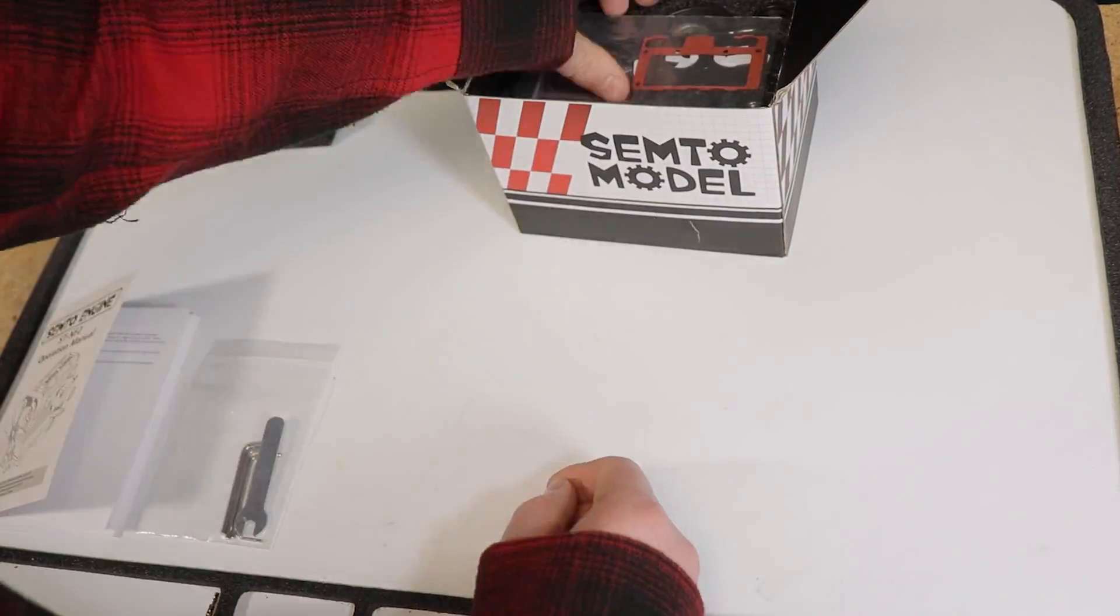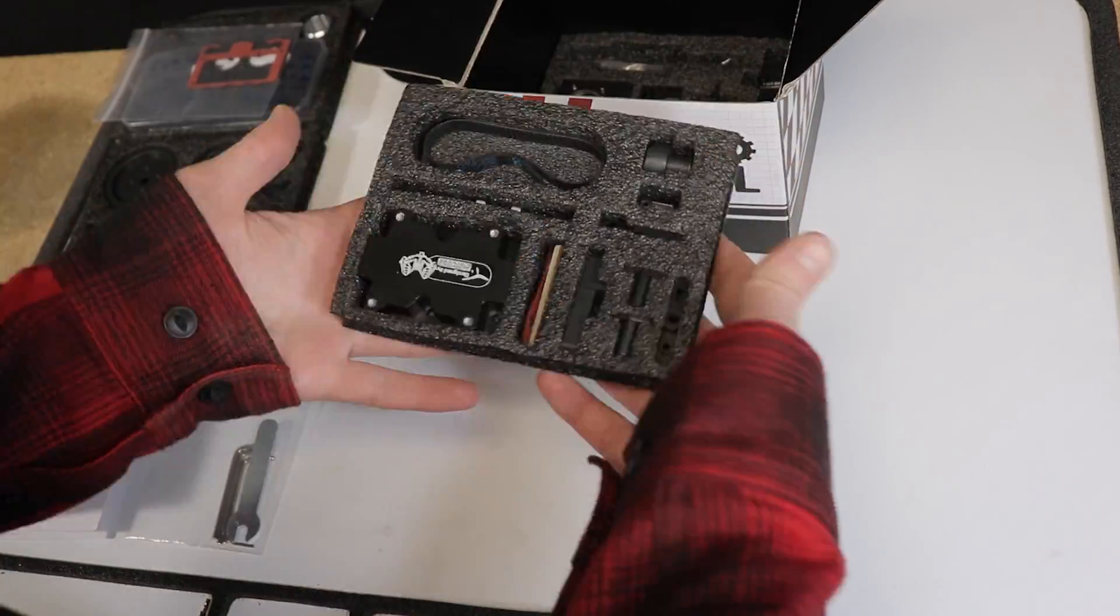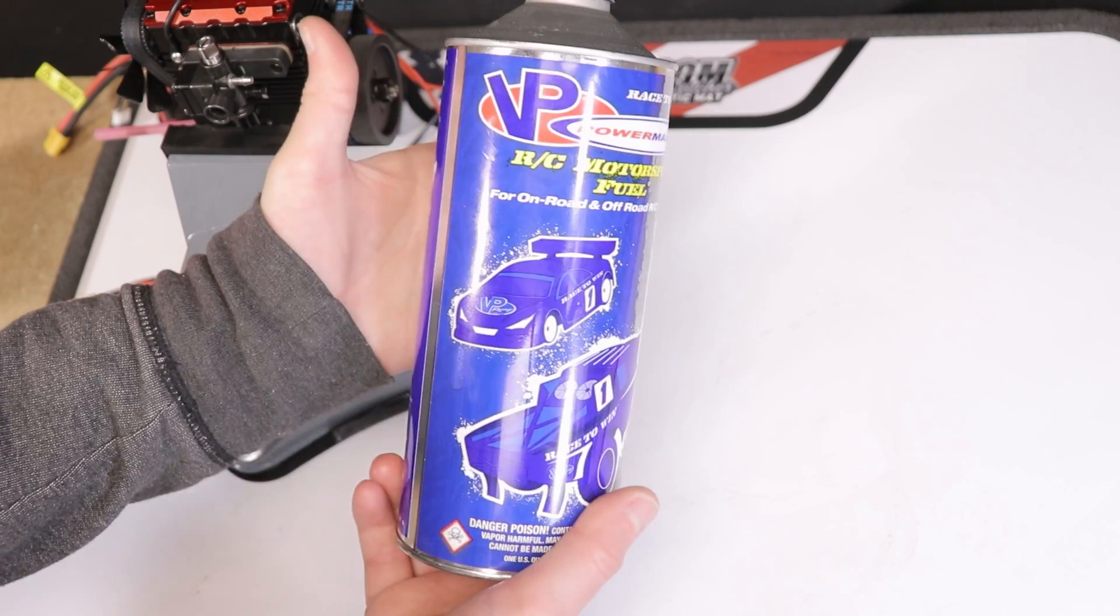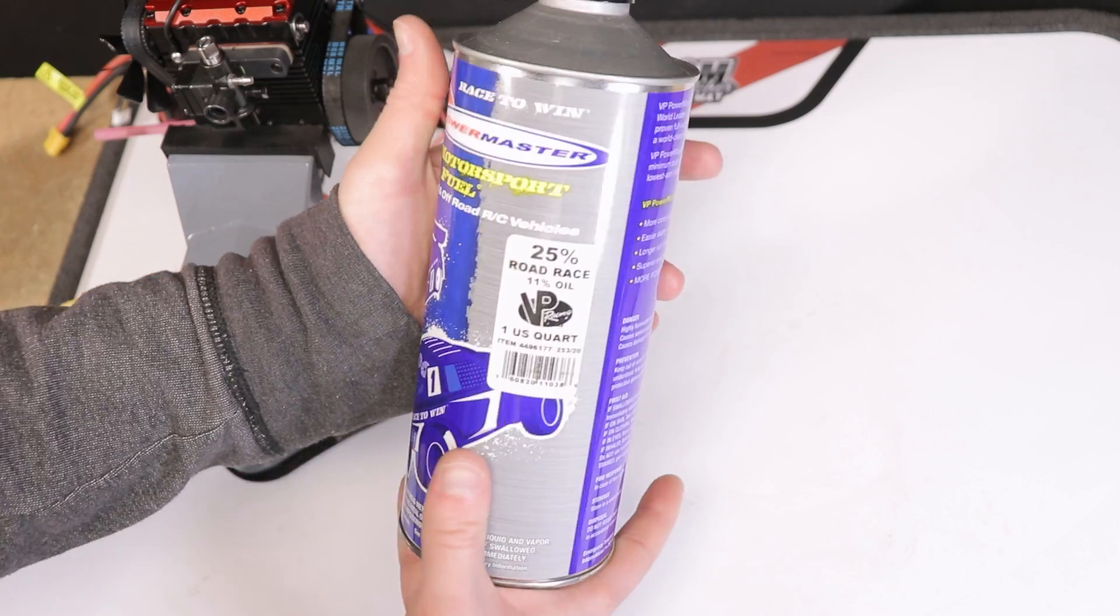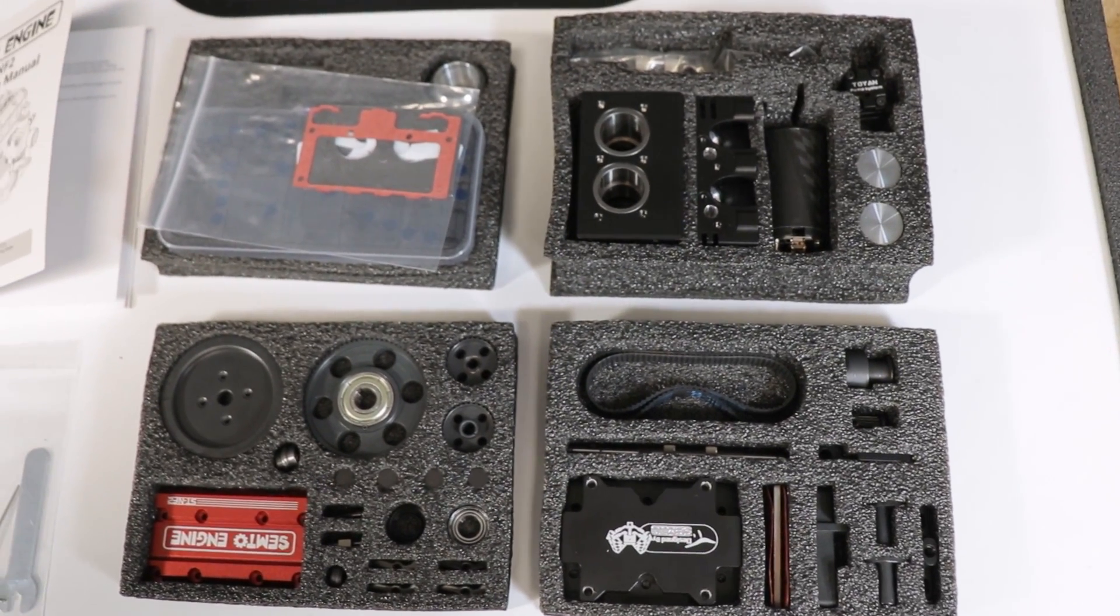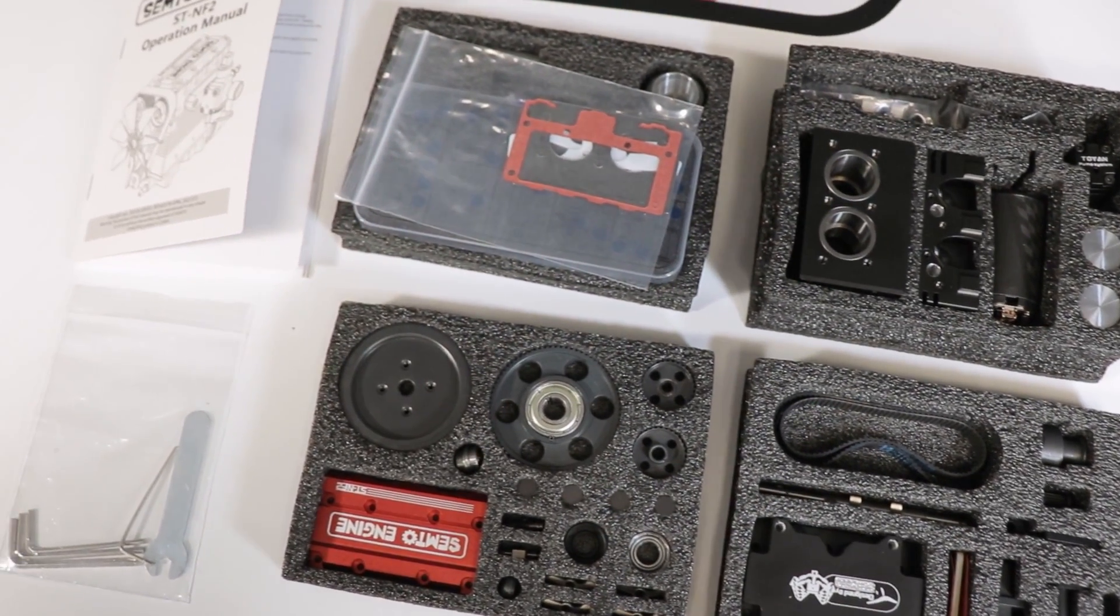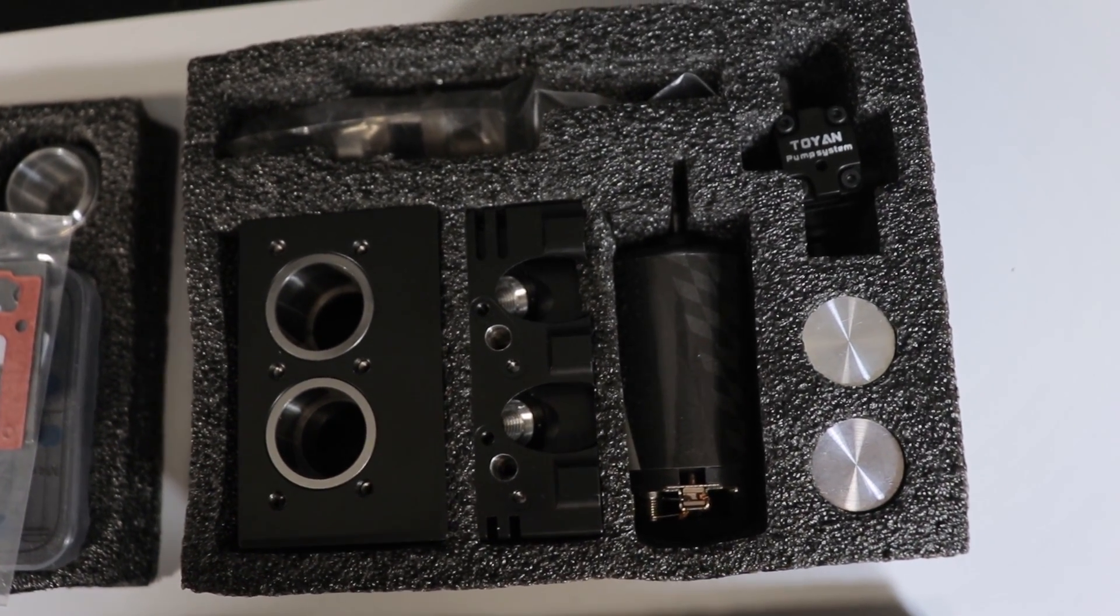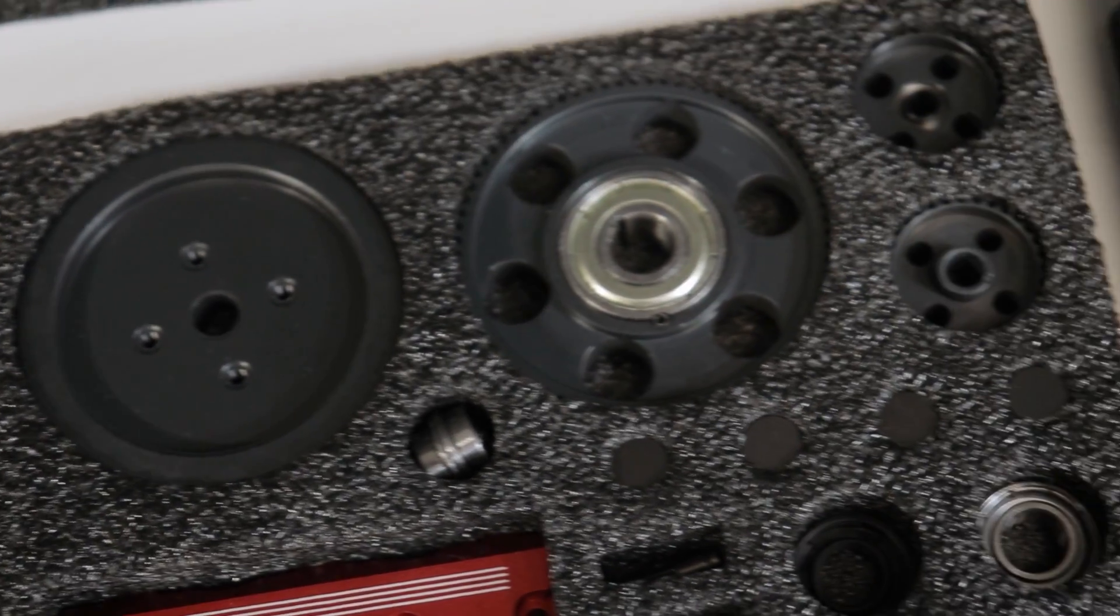Today the folks over at Sterling Kits have sent me this little engine to build and share my experience with all of you. The Semto ST-NF2 is an inline two-cylinder four-stroke air-cooled engine powered by conventional 20 to 25 percent nitro fuel like you would use for various other hobby engines. This is a lower cost engine selling for around 200 US dollars, suitable for both educational purposes and can be installed into RC vehicles.